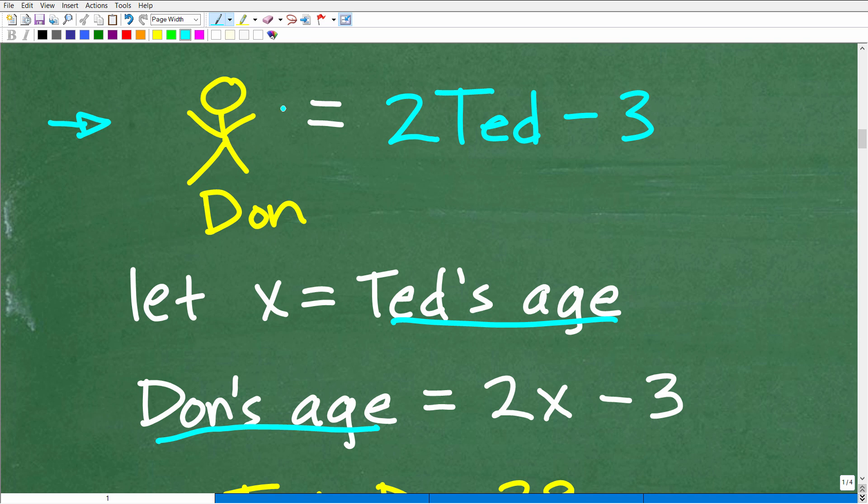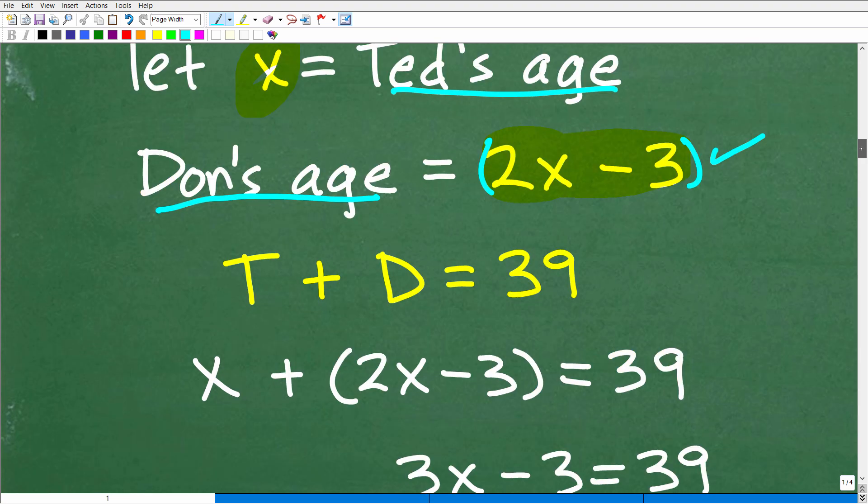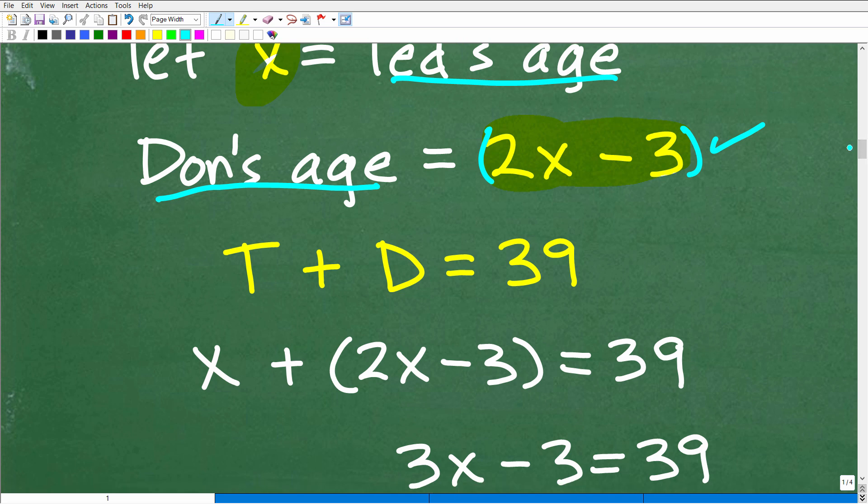So Don's age, right here is what? Well, it's going to be three less than twice Ted's age. And if Ted's age, we're saying is going to be the variable X, so Don's age is going to be what? 2X minus 3. Okay, so now I have two expressions or two variable expressions for both Ted's age and Don's age. And now we can actually think about how can we form an equation to solve for their respective ages, in this case, the variable X.